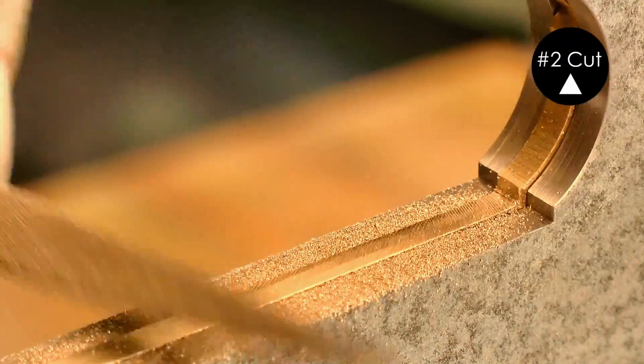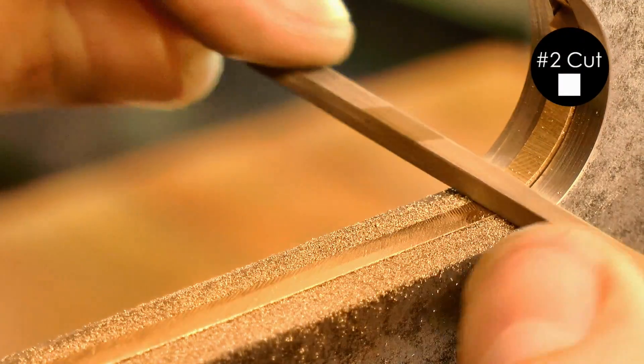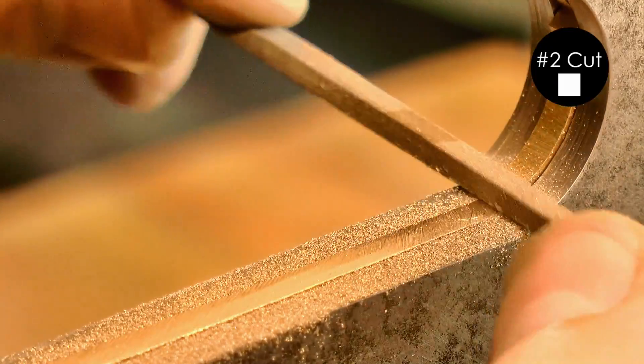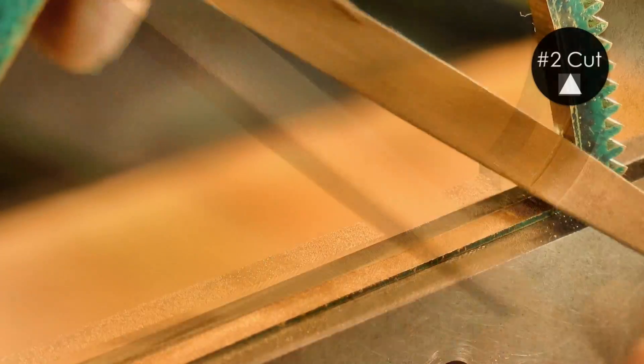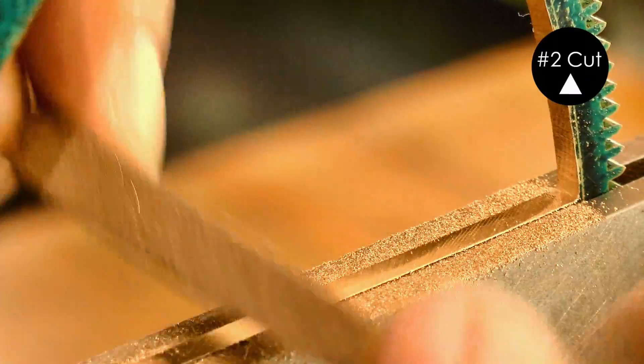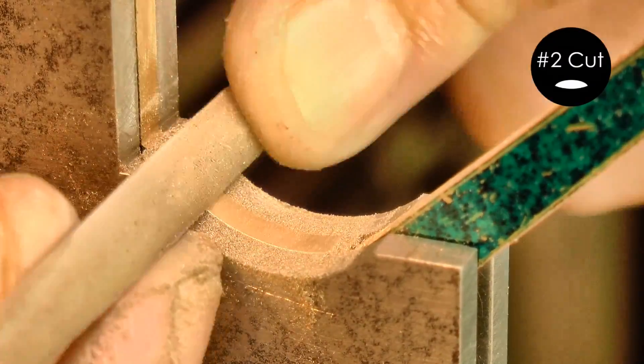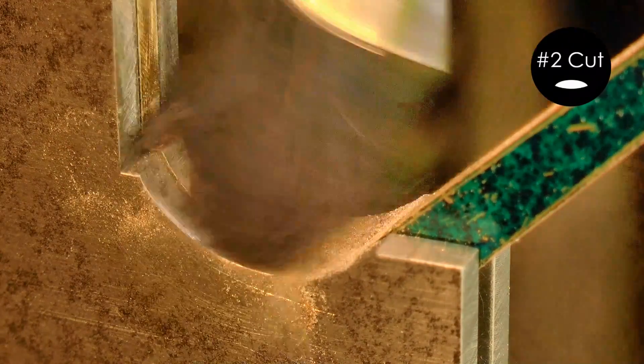I started out with number two cut files to get the wheel into basic shape, and I did every surface with the same cut before moving to a finer cut. And I'm using the guide to keep me honest by making sure that all of the surfaces are parallel to the guide, even though I'm still quite well short of it.